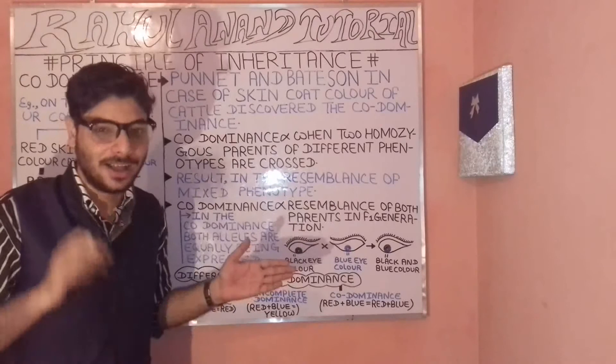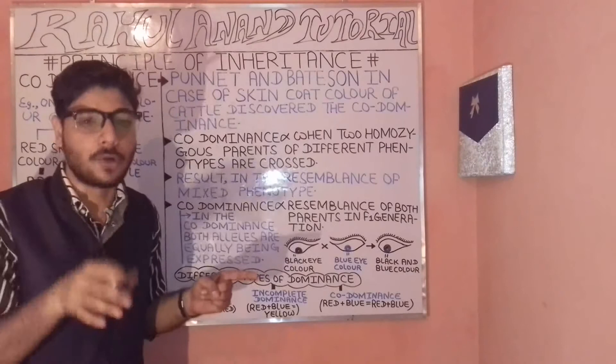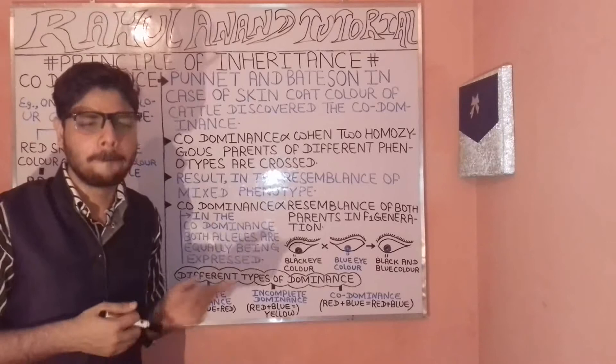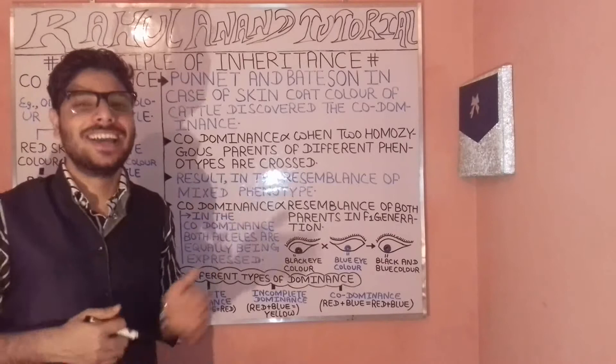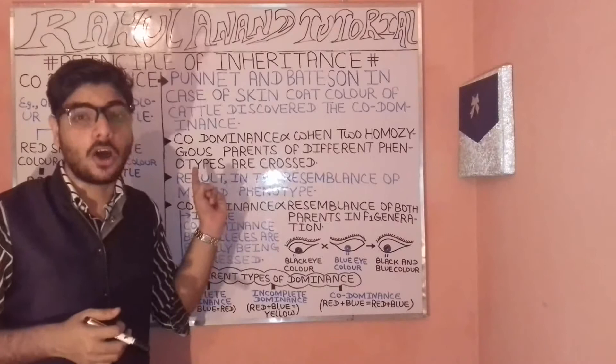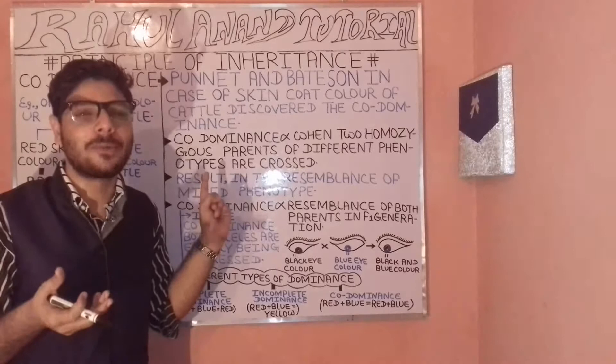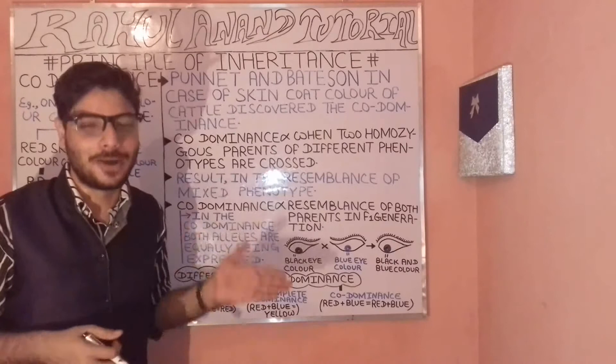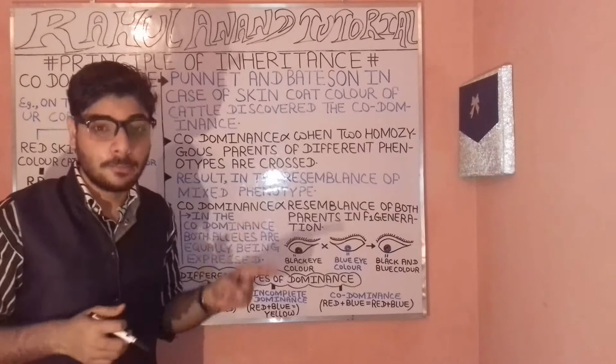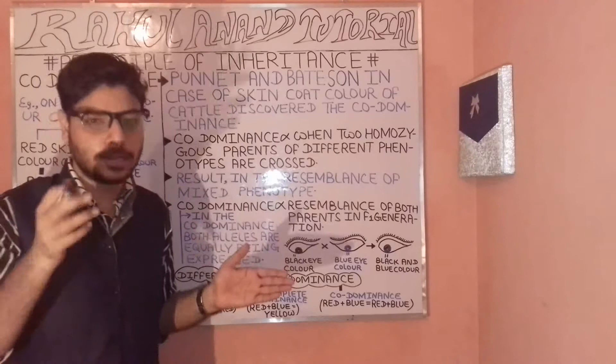We have two types of characteristics in terms of skin color: red color and white color. When a cross is performed, we get capital R and small r. Capital R is directly proportional to the dominant trait — the red color appearance. Small r stands for the recessive trait.